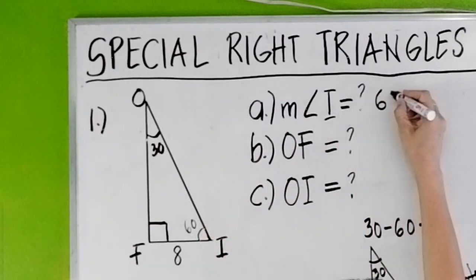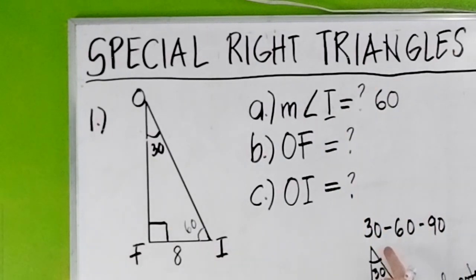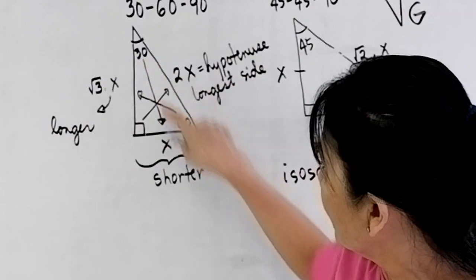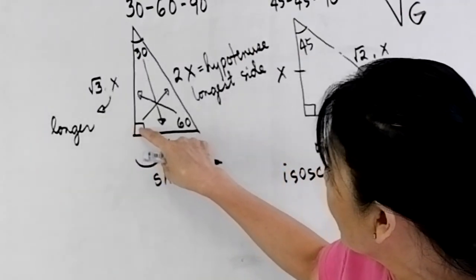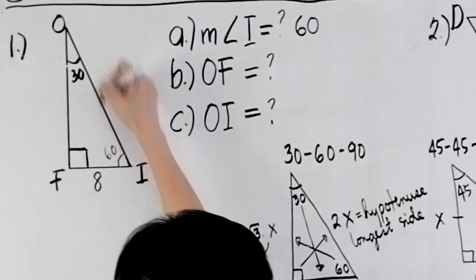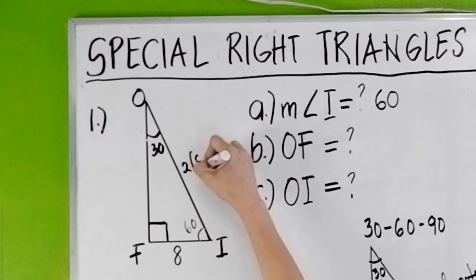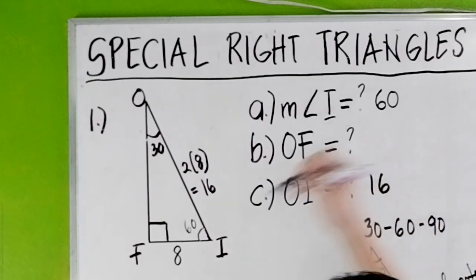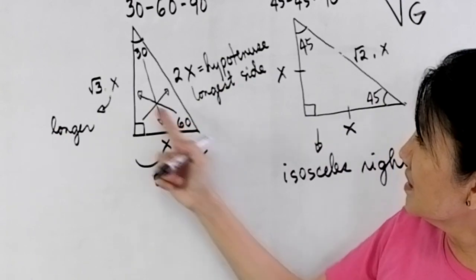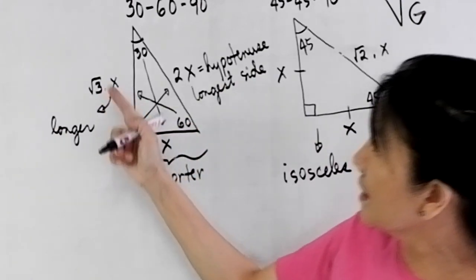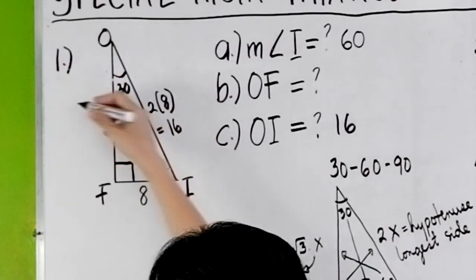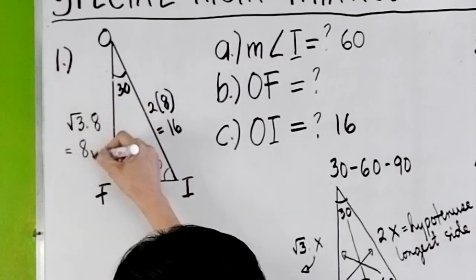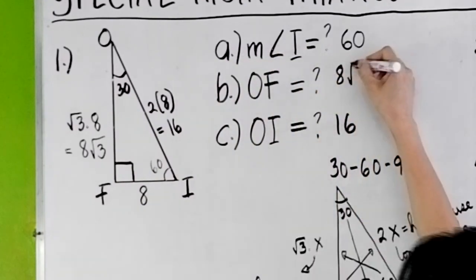Apply the 30-60-90 triangle theorem. Opposite the 30-degree angle is X, which is 8. Opposite the 90-degree angle is 2 times X, so OI is 2 times 8, or 16. And the side opposite the 60-degree angle is square root of 3 times X. The side opposite the 60-degree angle is OF, so OF is square root of 3 times 8, which gives us 8 square root of 3.